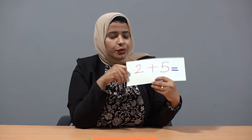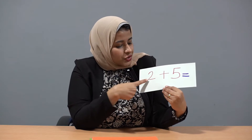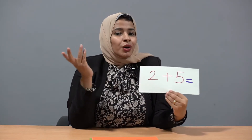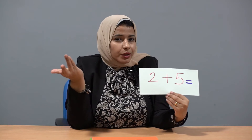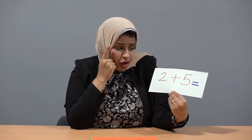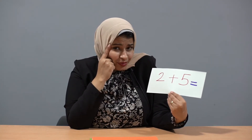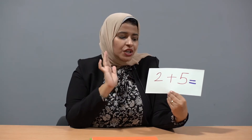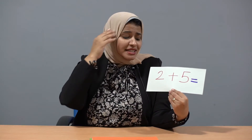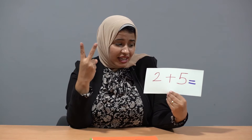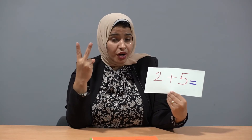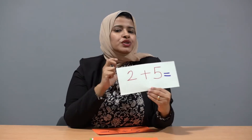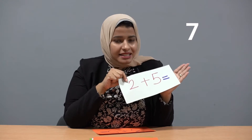Read with me this equation: two plus five equals. Which is the bigger number here — two or five? Five. Yes, five is the bigger number. So five in my mind and two in my hand. After five: six, seven. So the answer is seven.